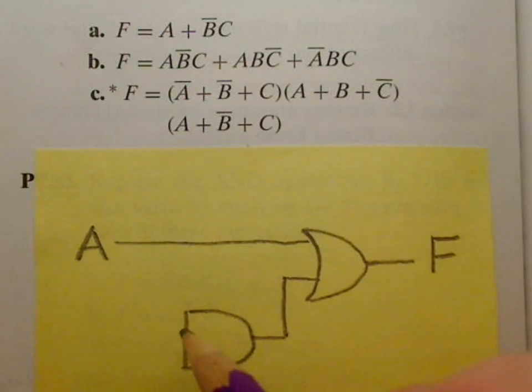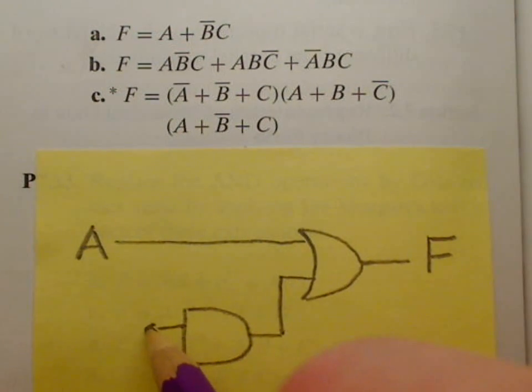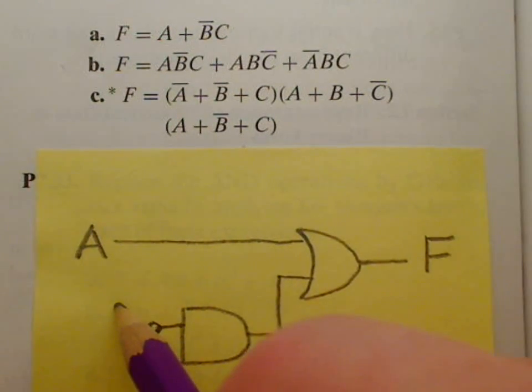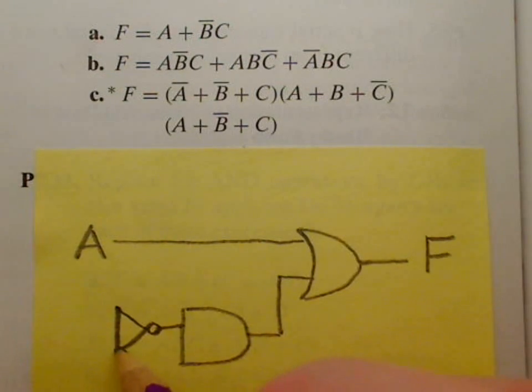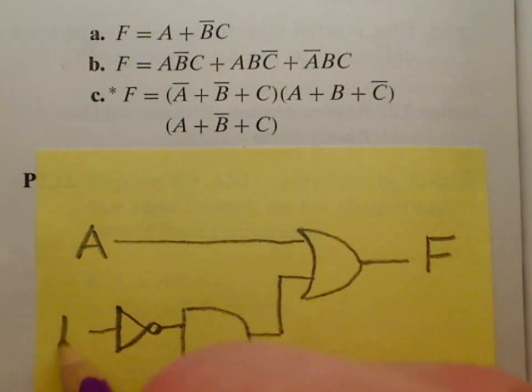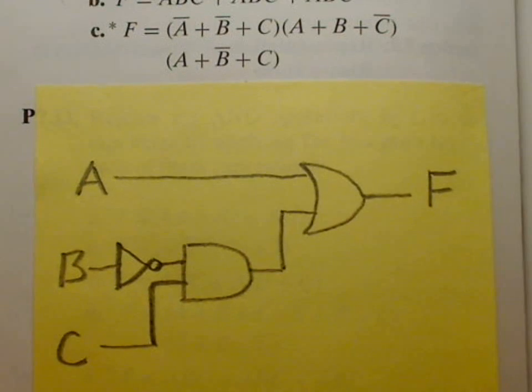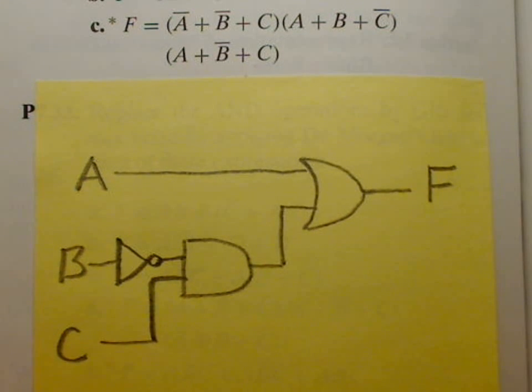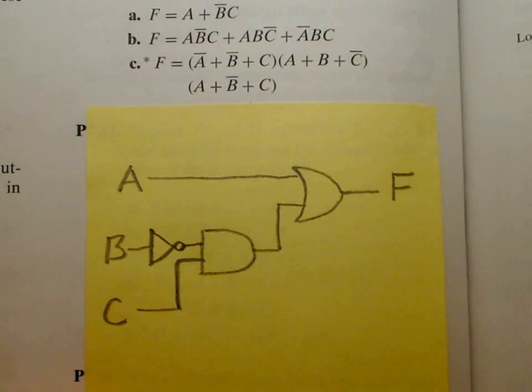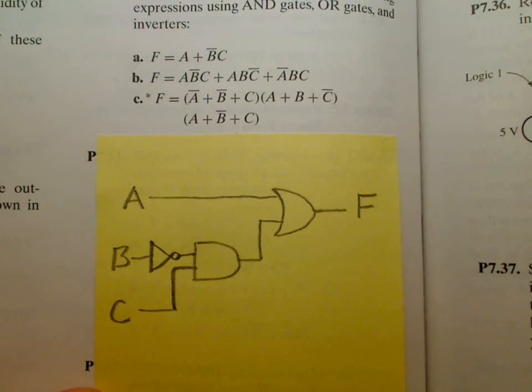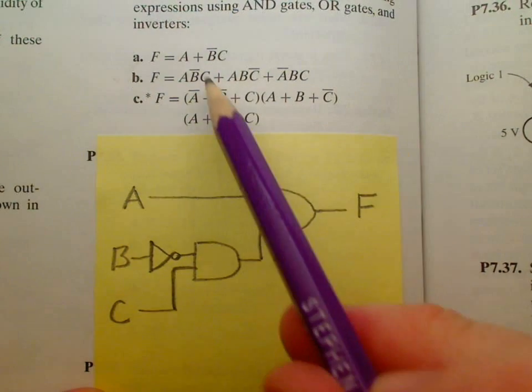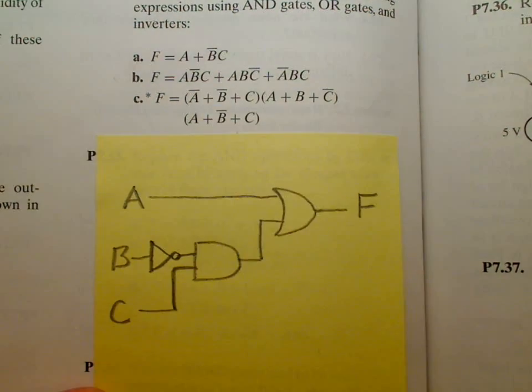NOT B and C, and let's see if I have enough space for the rest of this. Here's my inverter, and that's going to be B, and then C is my other input to the AND gate like that. So this circuit right here is the equivalent to that Boolean expression here in part A.